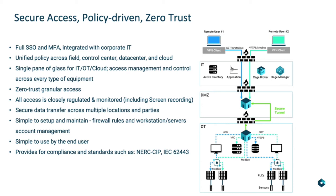Sage implements key zero trust core concepts such as setting an identity-based perimeter, which eliminates excessive trust in trust zones, and on-demand access, which provides access permission only when needed and revokes these permissions when they are no longer in use.